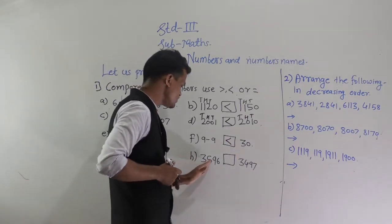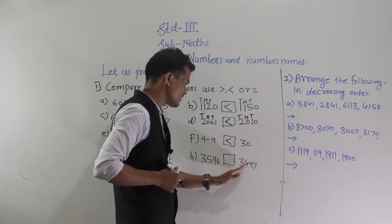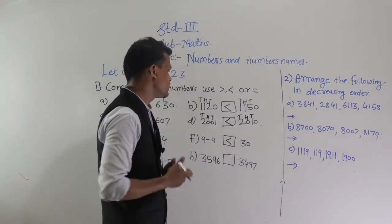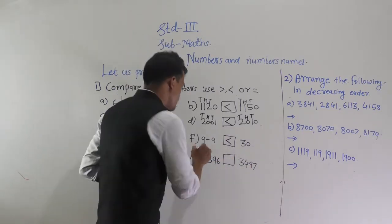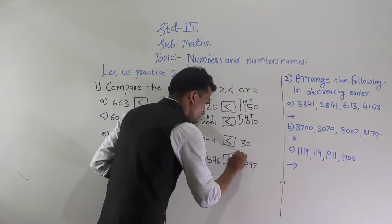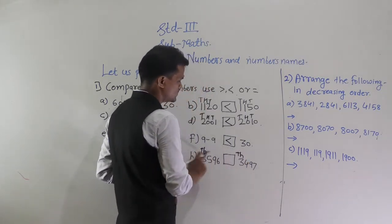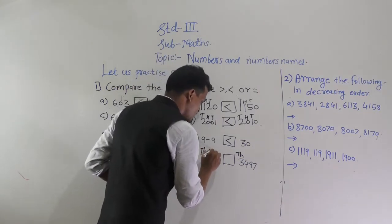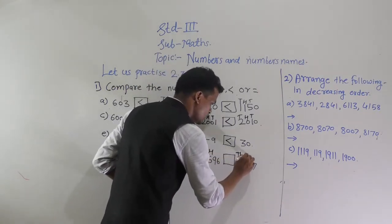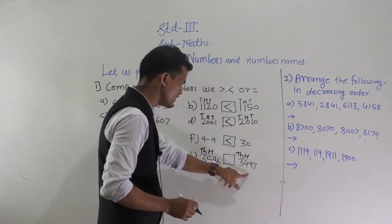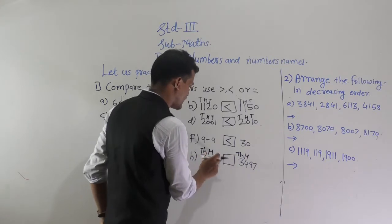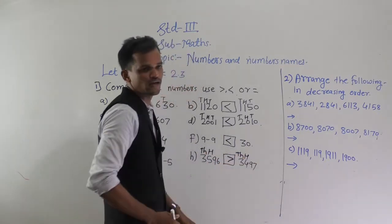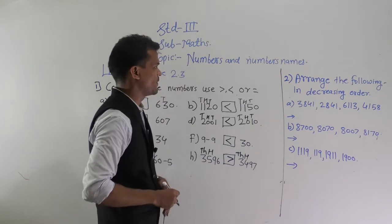Next, compare 3596 and 3497. Both numbers are 4-digit numbers. Compare the thousands place digit — same. Then compare the hundreds place digit: here 5 and here 4. So 3596 is greater than 3497.